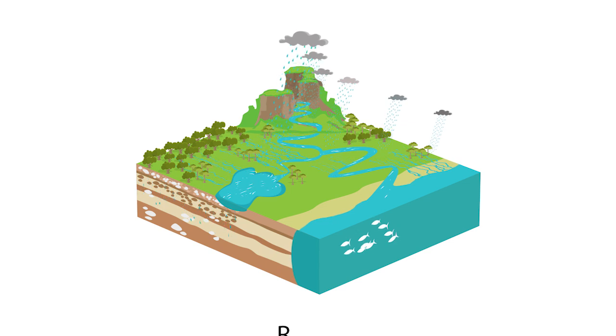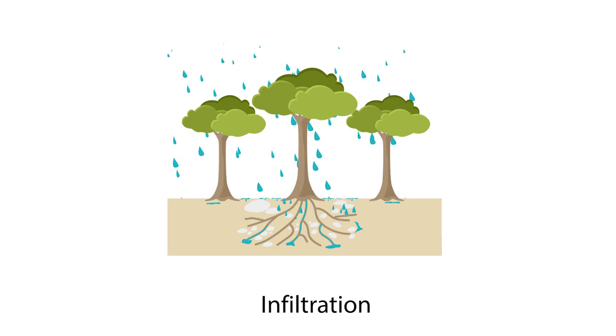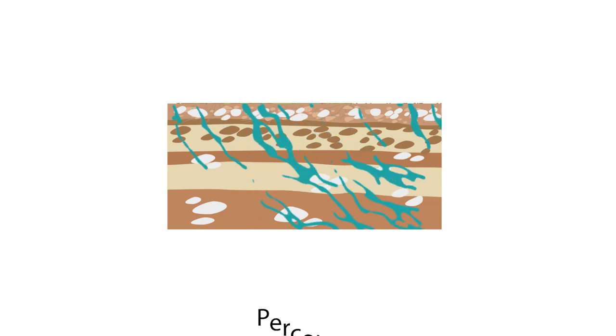When water flows over the ground, it's called runoff. When it soaks down into the soil, it's called infiltration. Plants use this water. Some water will seep deeper into tiny spaces in the soil and rock. This is called percolation.